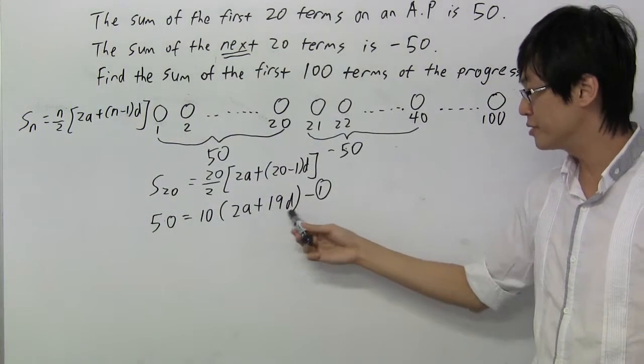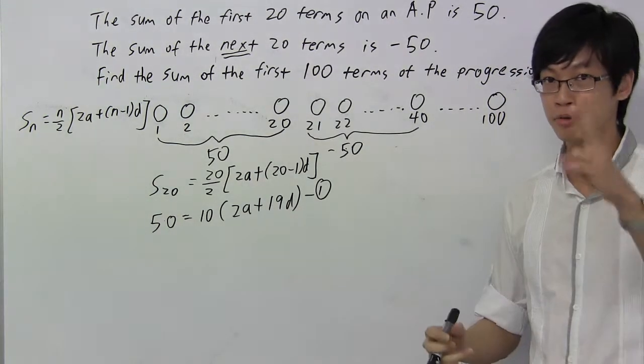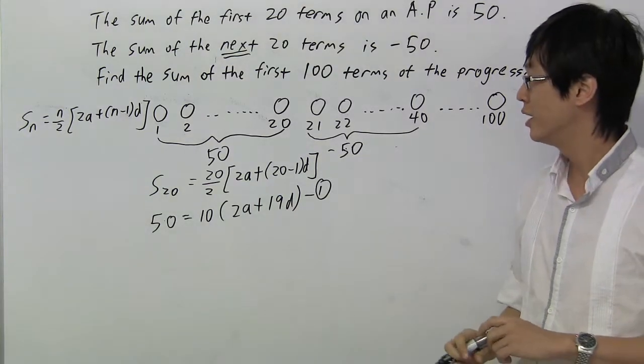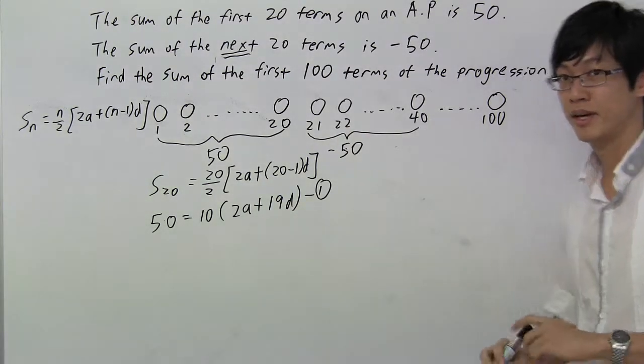Remember, we have two unknowns. To solve for two unknowns, you'll need two equations. So now we need to generate the second equation.